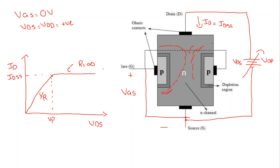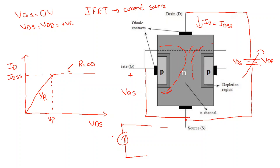Now to study the JFET — junction field effect transistor — as a current source. We know that an ideal current source has infinite resistance. The characteristic of a current source is that its resistance is infinite so that no current flows through the current source itself — all the current flows to the load. The load will always have less than infinite resistance; the load will have some finite resistance. So to make sure that the current flows through the load and not through the current source, an ideal current source must have infinite resistance.